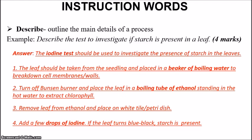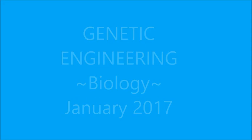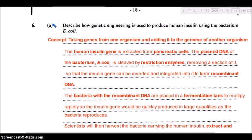Let's look at another example of the instruction word 'describe.' I'm going to insert a clip of a past paper solution. The question says: 'describe how genetic engineering is used to produce human insulin using the bacterium E. coli.' You have to consider the whole concept behind genetic engineering — manipulating genes by taking genes from one organism and adding them to the genome of another.